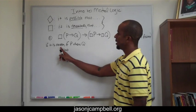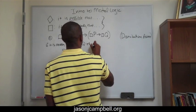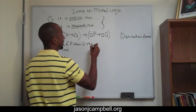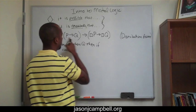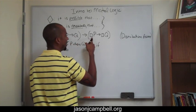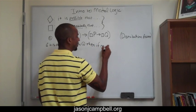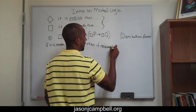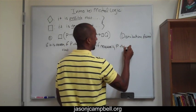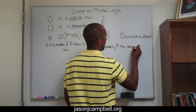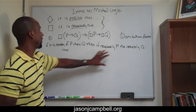So if it is necessary that if P, then Q, then what does it say? If then - if P, then Q - then if necessarily P, because it has the necessary there, then necessarily Q. This is how I would read the statement.